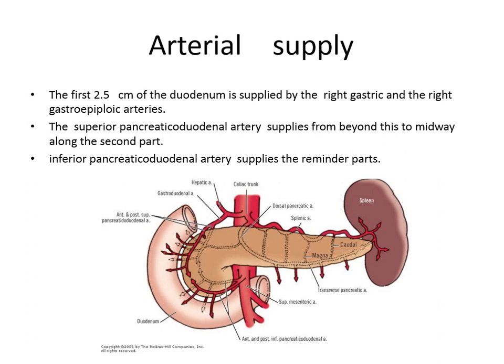The arterial supply of the duodenum: the first 2.5 cm is supplied by the right gastric and right gastroepiploic arteries. The superior pancreaticoduodenal artery, a branch of the gastroduodenal artery, supplies from the first part to the middle of the second part. From that point downward, the inferior pancreaticoduodenal artery — a branch of the superior mesenteric artery — takes over. In duodenal ulcers, bleeding is very difficult to control because it comes from both the celiac (via gastroduodenal) and superior mesenteric arteries.